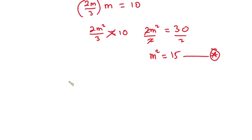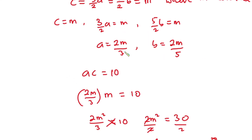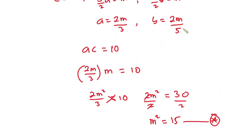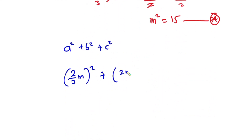Now from the problem we have to find a squared plus b squared plus c squared. We know a is (2/3)m, b is (2/5)m, and c is m. So we have (2m/3)² plus (2m/5)² plus m squared.